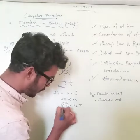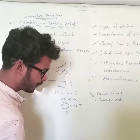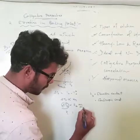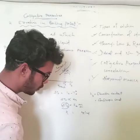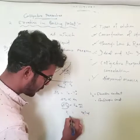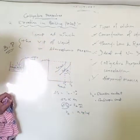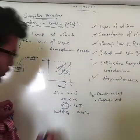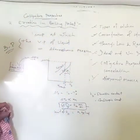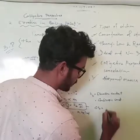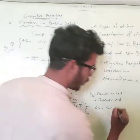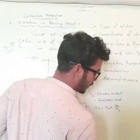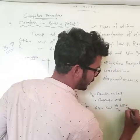The unit of temperature is Kelvin, and the unit of molality is mol per kg. So the unit of Kb is Kelvin·kg per mol. The equation can be written as: ΔTb equals Kb into molality, which is W₂ divided by M₂ into 1000 divided by W₁.